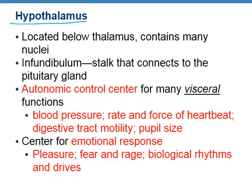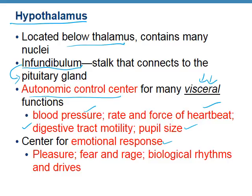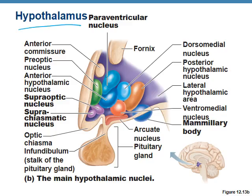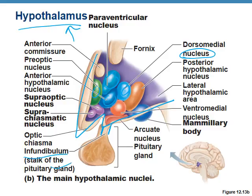The hypothalamus hangs below the thalamus. There's a stalk called the infundibulum that connects the pituitary to the hypothalamus. The hypothalamus is responsible for autonomic control of many visceral organs — blood pressure, heartbeat, digestive tract, and pupil size. It's also the center for emotional response: pleasure, fear, rage, biological rhythms, and sex drives. The figure shows many nuclei in the W-shape of the hypothalamus, with the infundibulum stalk leading to the pituitary gland.